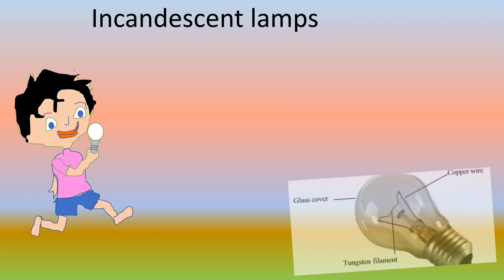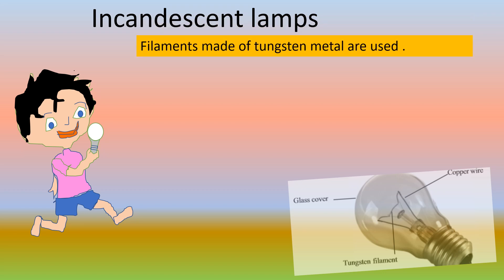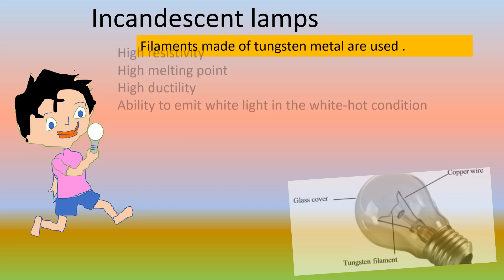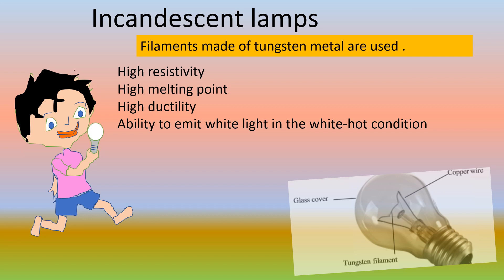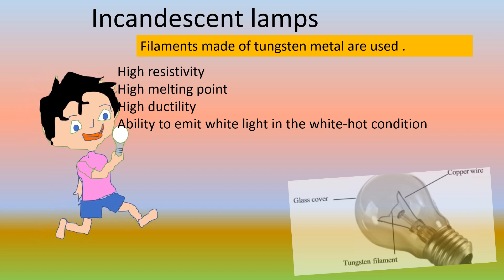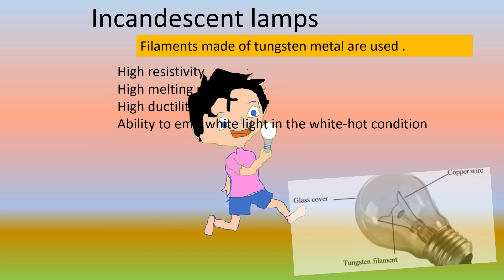In these lamps the filaments are made of tungsten metal and the properties are high resistivity, high melting point, high ductility and ability to emit white light in the white hot condition. At normal voltages the filament becomes white hot and gives out light. Such lamps are the incandescent lamps.